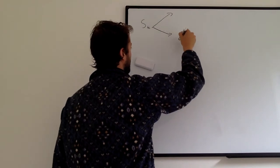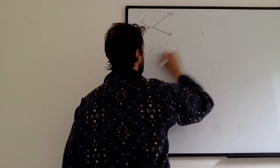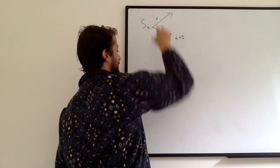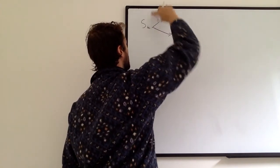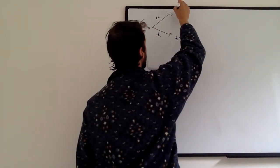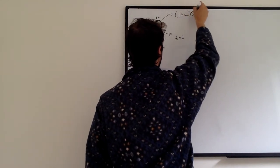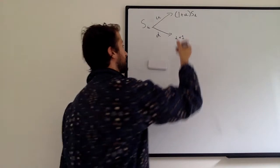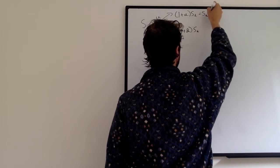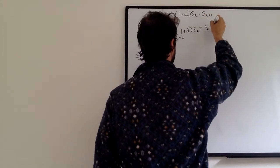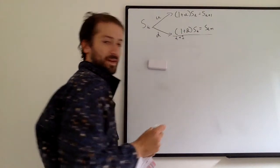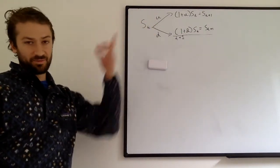We're going to think about a simple case where the stock has two options between now and time T plus one. There are two options: it can either go up — an up move — or it has a down move. We use U and D for up and down move. In the up move, the stock is worth one plus U times the stock price at time T. And in the down move, it's worth one plus D times the stock price at time T.